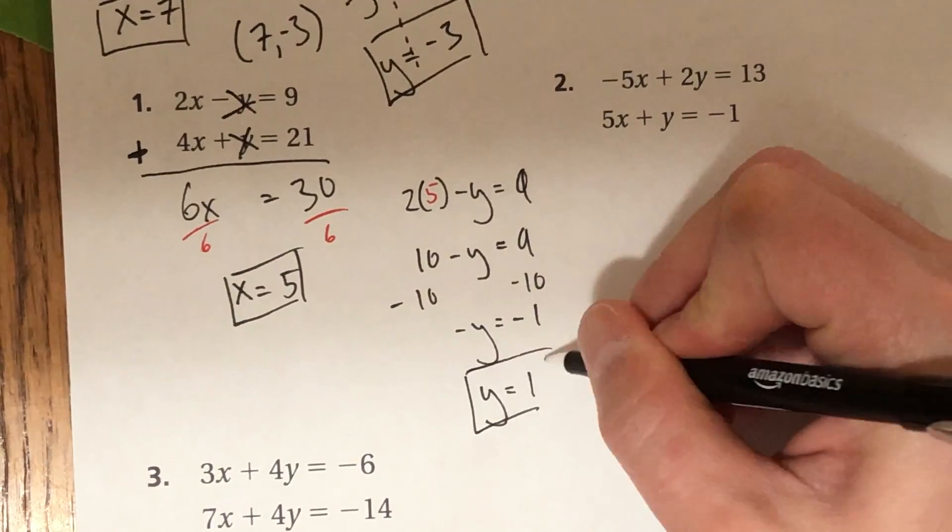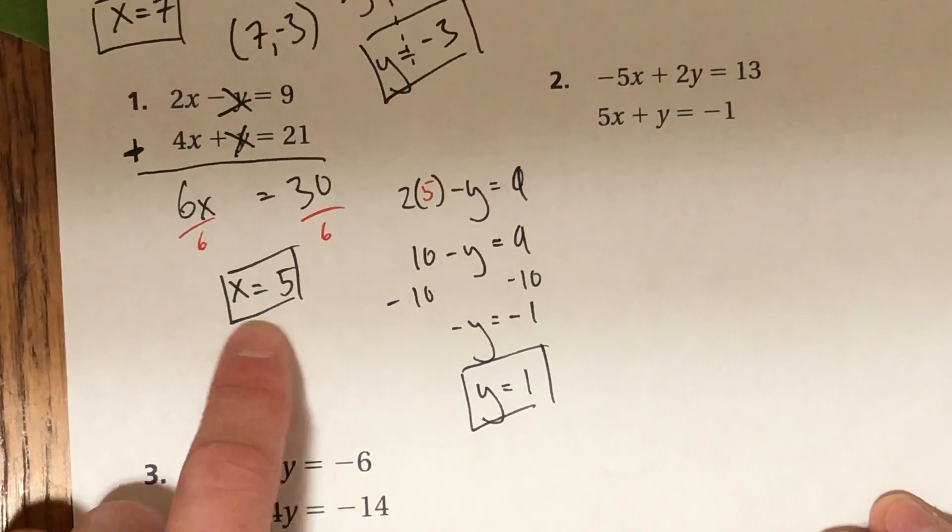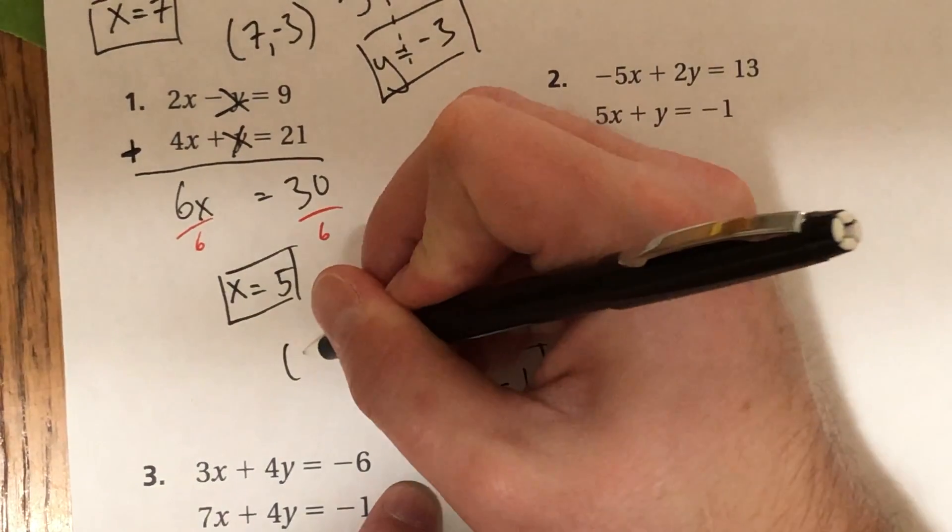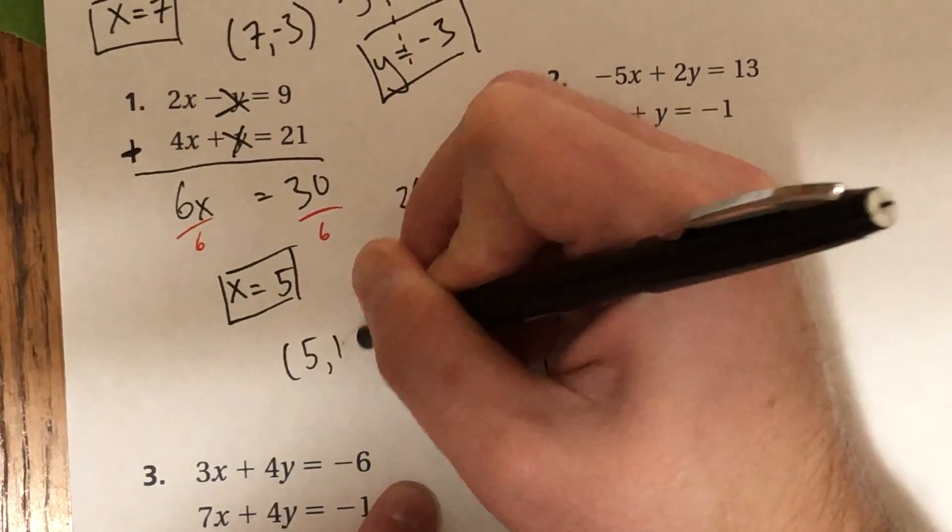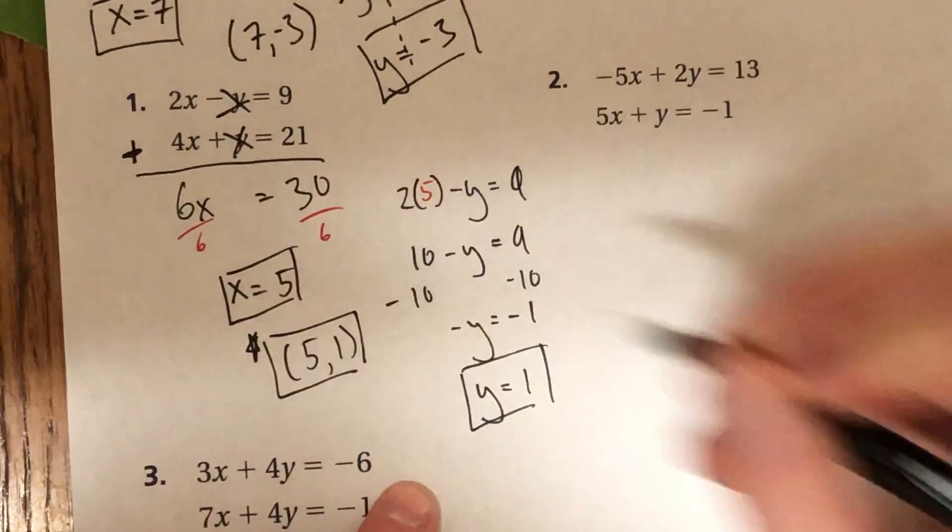So there is my other half of my solution. I have 5 and I have 1. So my final answer is 5, 1. There it is.